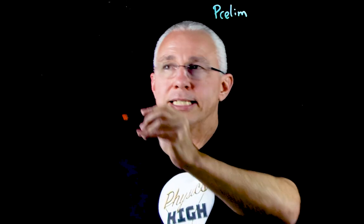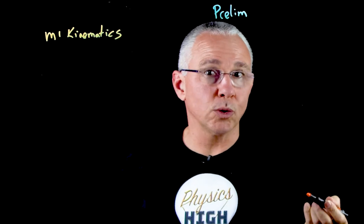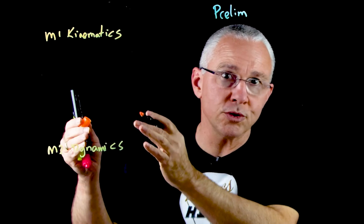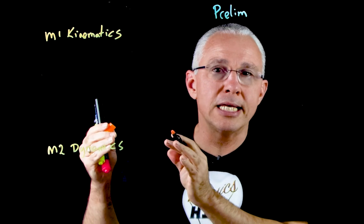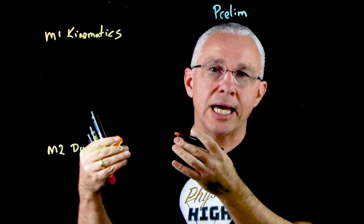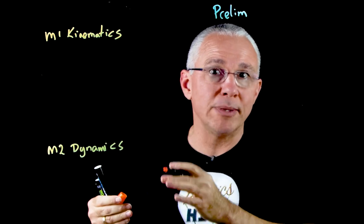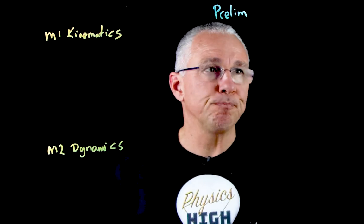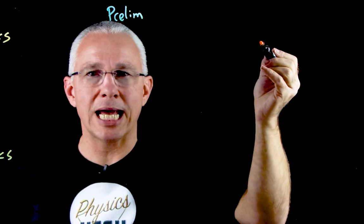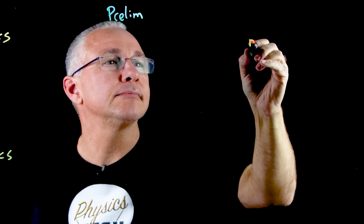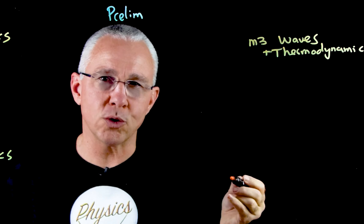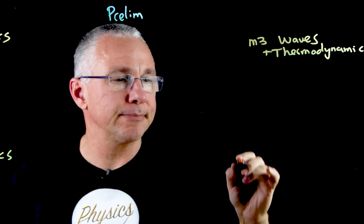The first module is kinematics. The second module is dynamics. These two modules can actually be combined as a unit called mechanics, and I have a video on what mechanics is — the link will be in the description below. Module three looks at waves and thermodynamics. And finally, module four is all about electricity and magnetism.